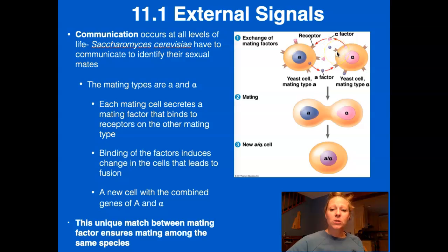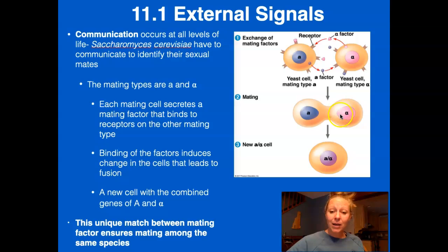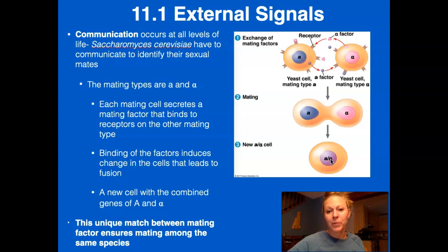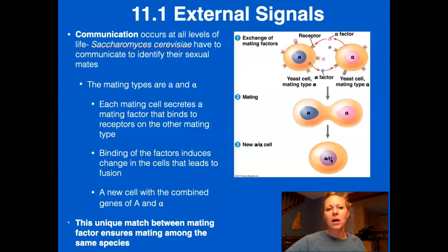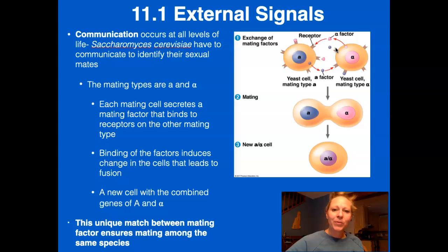The receptor on the alpha mating type is going to receive the little sphere from mating type A. When one receives the mating factor of the other in their receptors, they're going to combine and fuse their genetic material, producing a new cell with combined genetic material. This process ensures they know they're the same species — because if they were two different species, the genetic material wouldn't combine successfully. These receptors and mating factors allow one yeast cell to identify another — it's a form of communication.